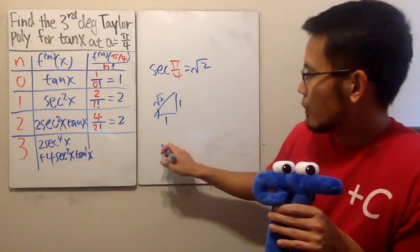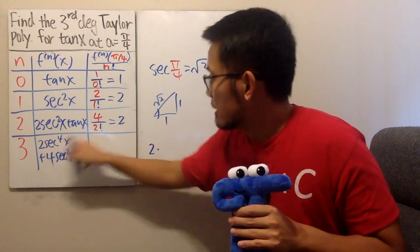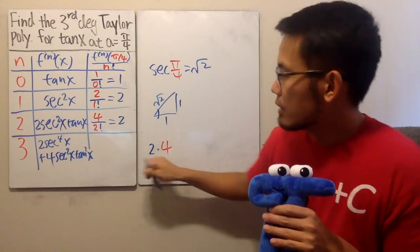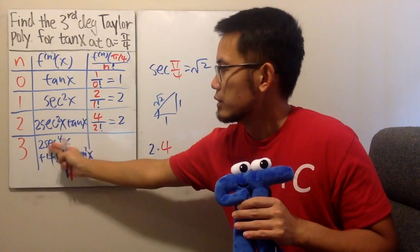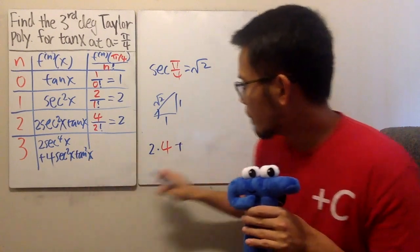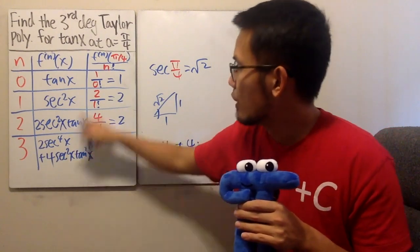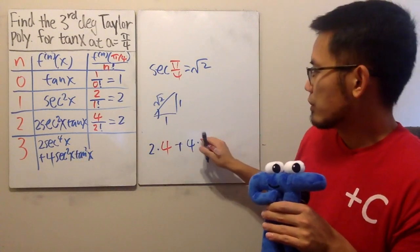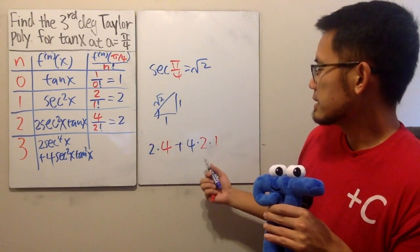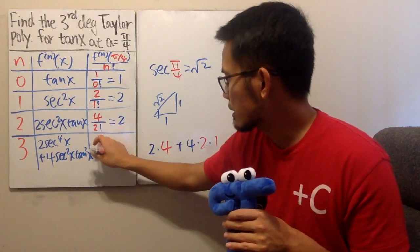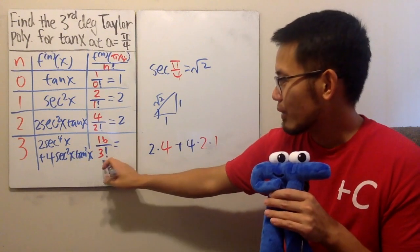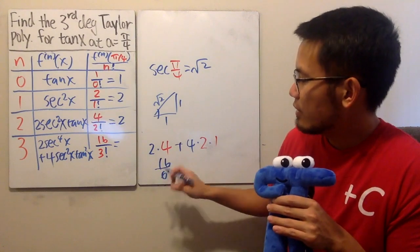Lastly, we'll do this one. Here we have 2 times square root of 2 to the 4th power is going to be 4, because the square is already 2, to the 4th power, you get 4, and 4 times 2, so that's the first part. And then, we add, this is 4, times secant squared, when x is pi over 4, this is going to give us 2. And lastly, tangent of pi over 4 is 1, squared that is still 1. And now, this is 8 plus 8, which is 16, so we see the top is 16, but we still have to divide it by the 3 factorial. This is 6. So, all in all, 16 divided by 6, we get 8 over 3.